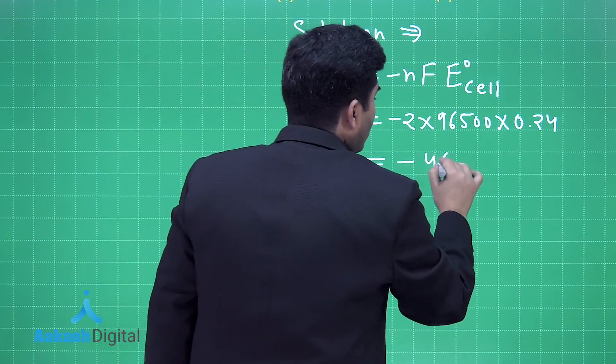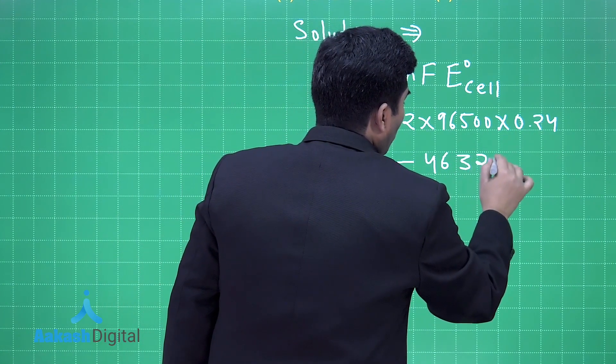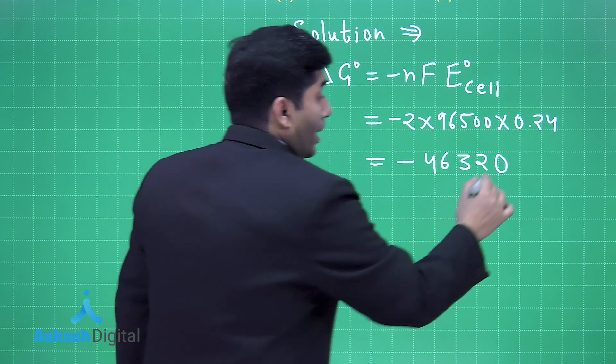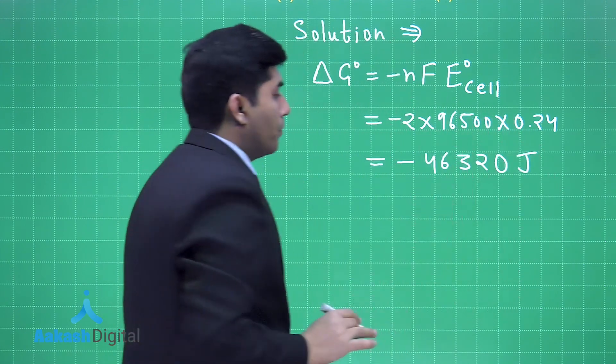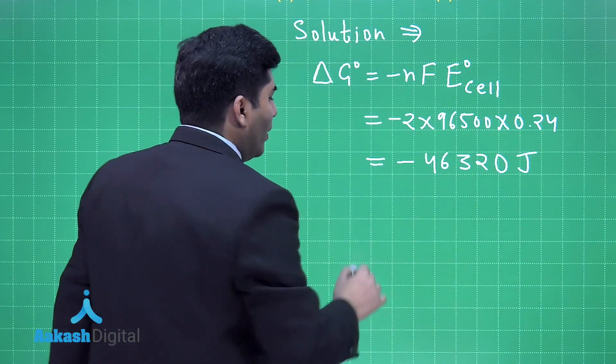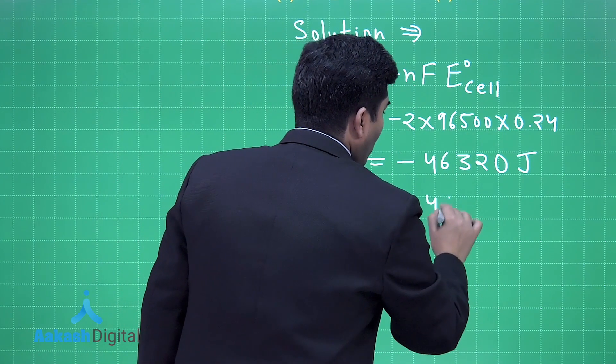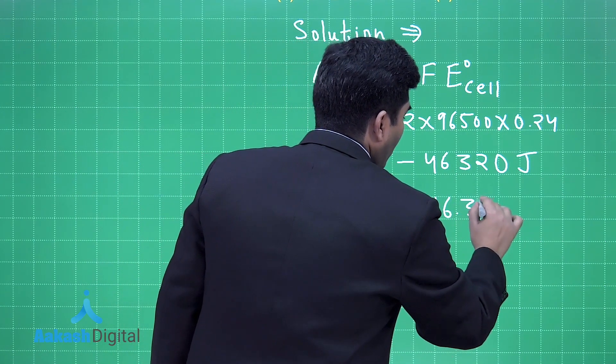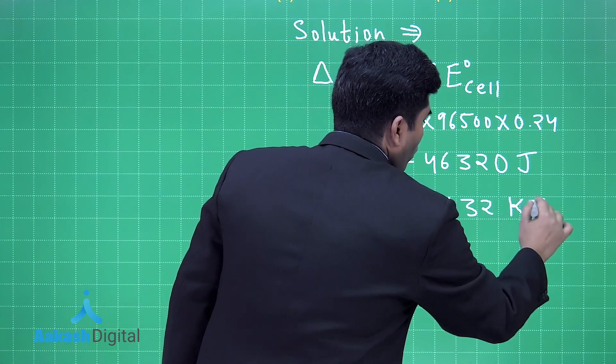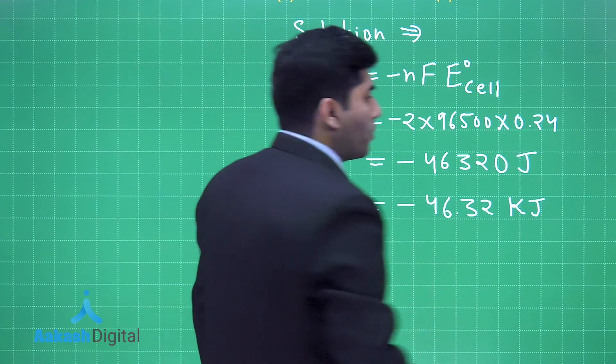And when we solve it, it will be minus 46320 joules. Right? And we will convert it into kilojoules because all the answers are given in kilojoules. That's why 46.32 kilojoules. Let's see in which option it is given.